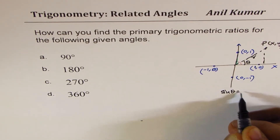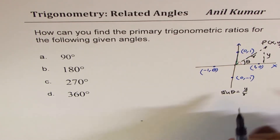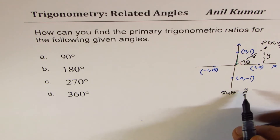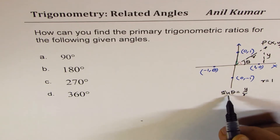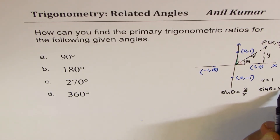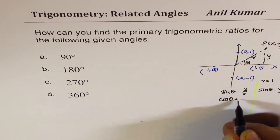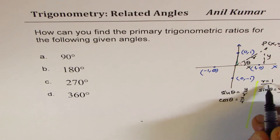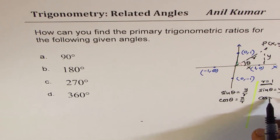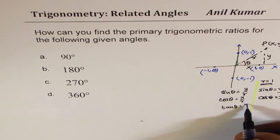Sine theta equals the opposite side y over r. If r equals 1, then sine theta equals y. Cos theta equals x over r, and if r is 1, then cos theta equals x. Tan theta is the ratio of y and x.